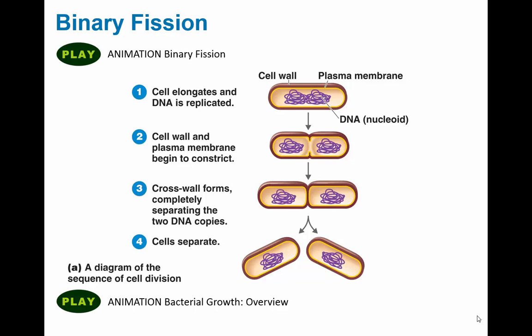Binary fission is a process where a single cell basically duplicates itself, splits in half, and then divides into two individual identical cells. It's a process of cloning in a sense, where a clone is an identical copy of a cell.